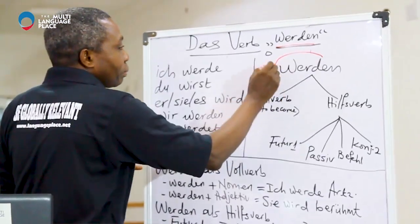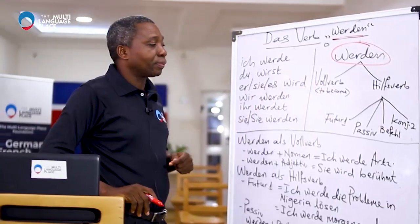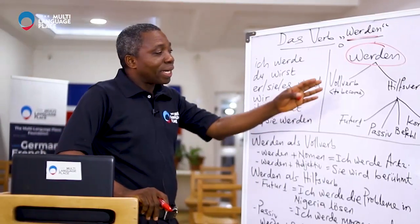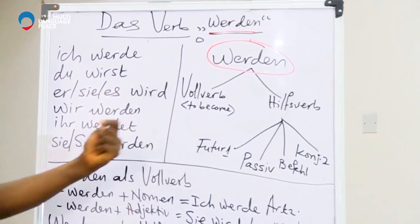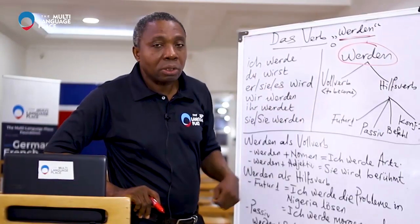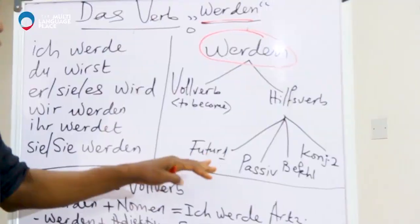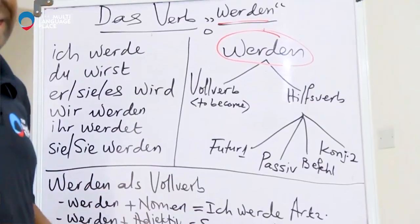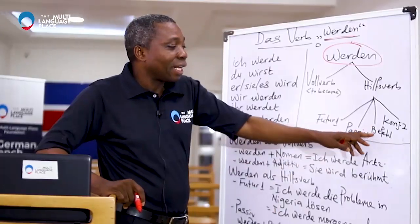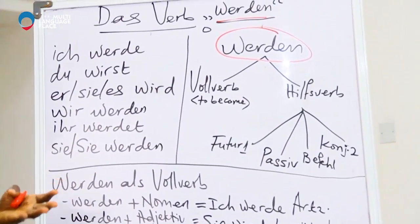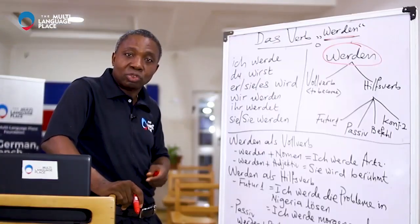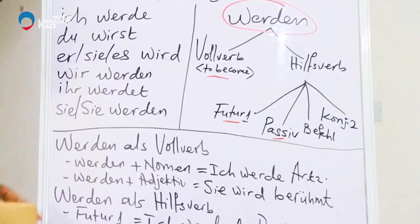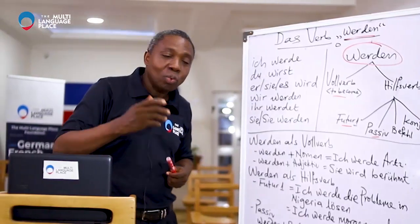I have the verb here. It functions as a full verb, and it functions as a helping verb — or auxiliary verb. When it functions as full verb, the meaning is 'to become.' When it functions as helping verb, it can be used to form future tense, passive sentences, commands, or you can transform it into Konjunktiv. Those last uses we'll talk about later.